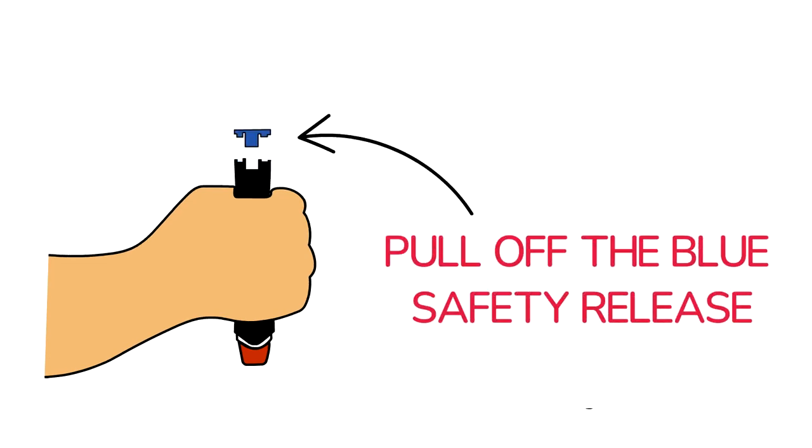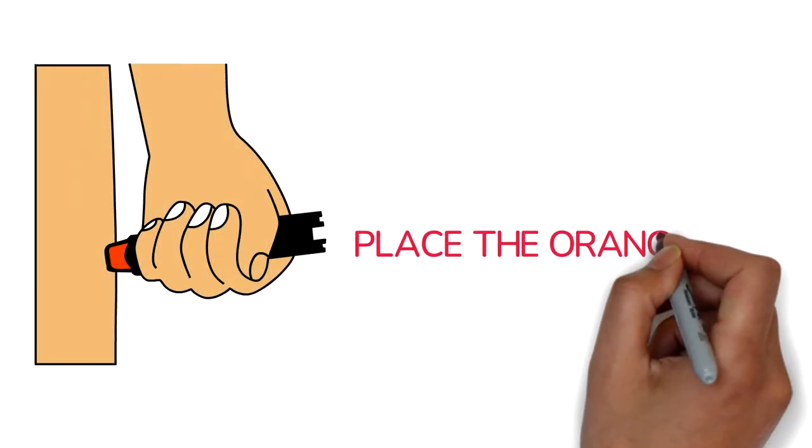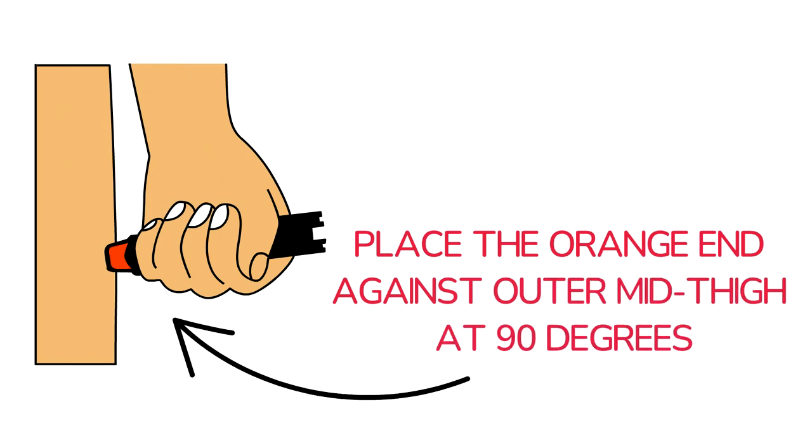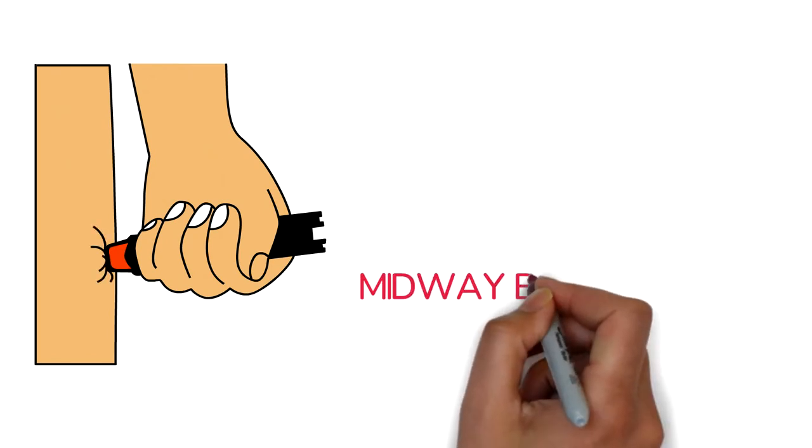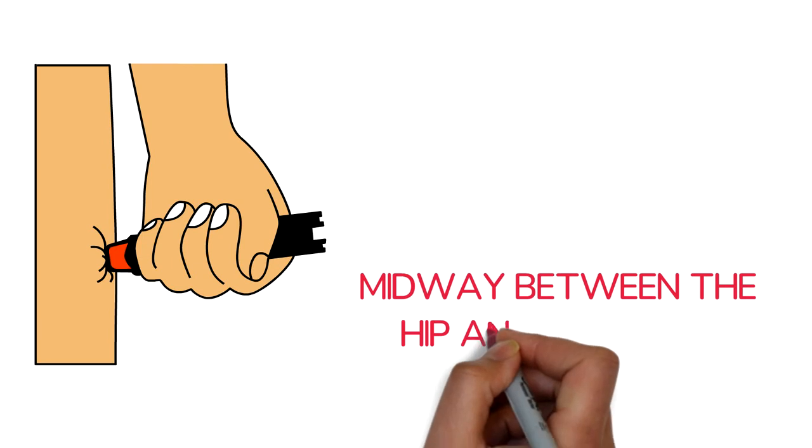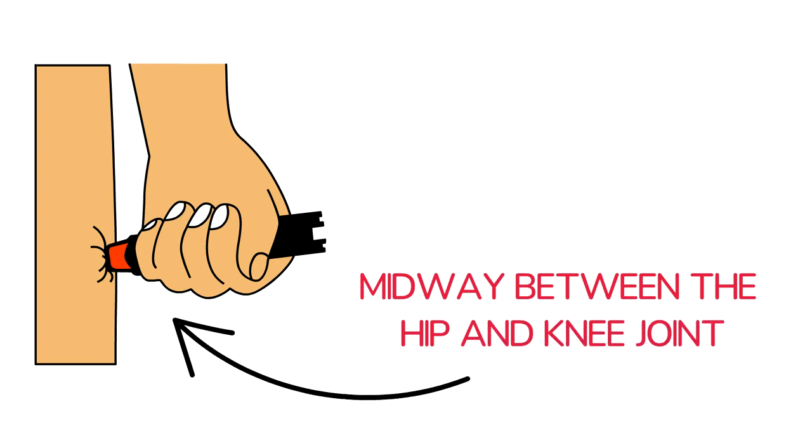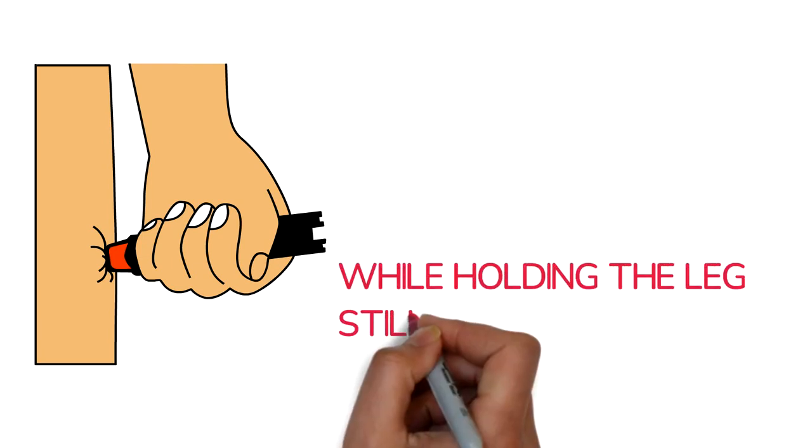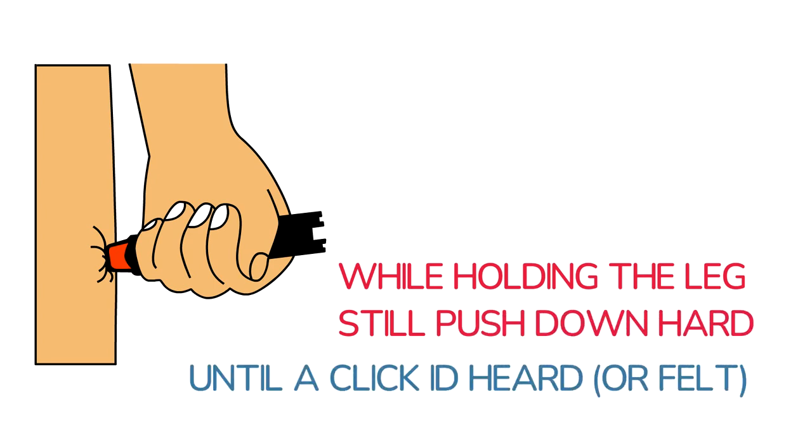Place the orange end firmly against the middle of the outer thigh. The EpiPen works through a single layer of clothing, but not through pockets or seams. Push the EpiPen down onto the thigh until you hear a click.